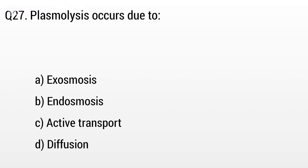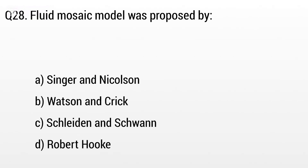Question 27. Plasmolysis occurs due to: Option A: Exosmosis, B: Endosmosis, C: Active transport, D: Diffusion. The right answer is option A, Exosmosis.